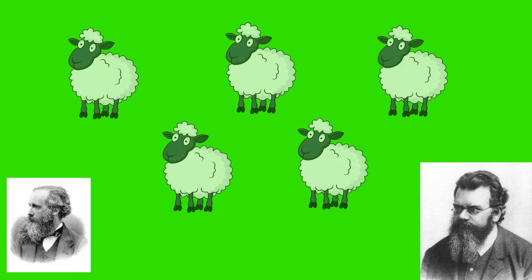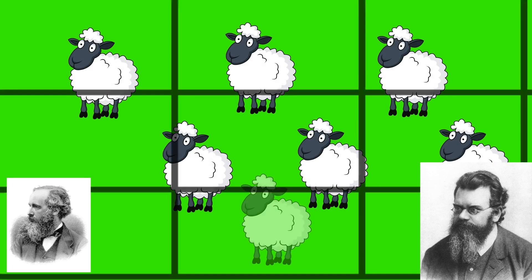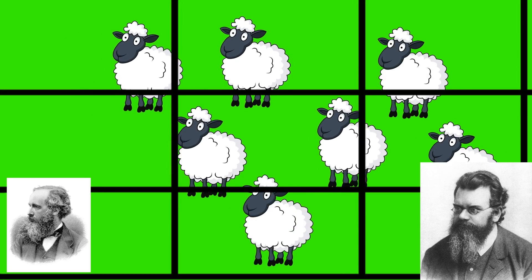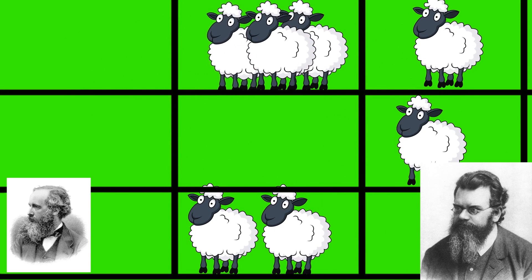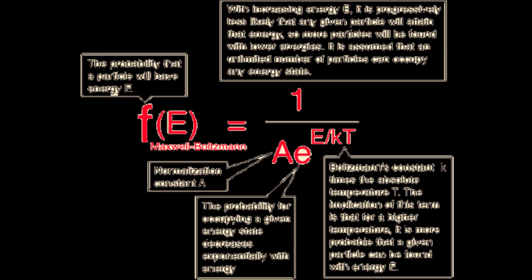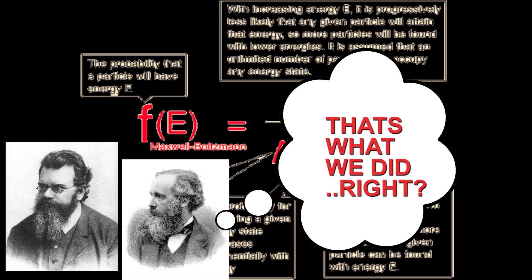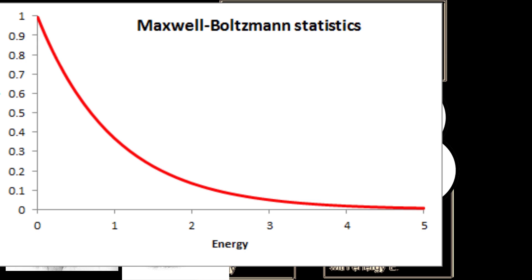So when the sheep are completely free, that means our system is at equilibrium, then the distribution of these sheep — that means how many sheep are there in box E7, in box E8 — follows this function. And this function is none other than the Maxwell-Boltzmann distribution function. And this is its plot.